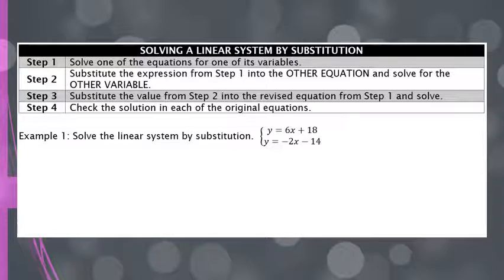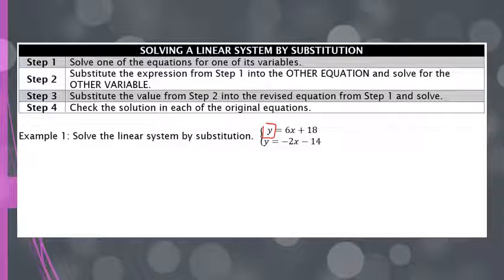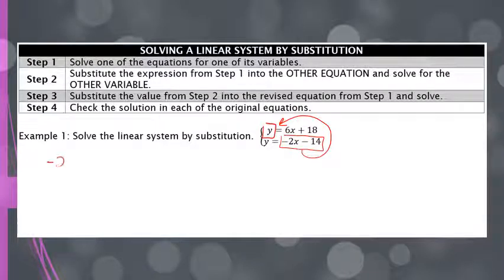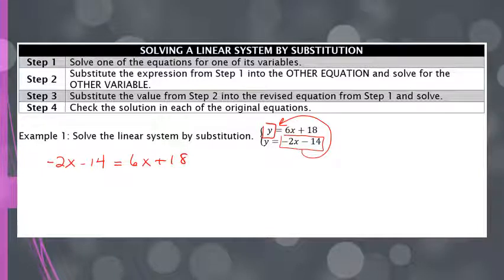The next thing we're going to do is substitute the expression that's solved into the other equation. This top equation says that y equals 6x plus 18, and the bottom equation says that y also equals negative 2x minus 14. So I'm going to take the bottom equation and plug it in for y in the top equation, writing negative 2x minus 14 equals 6x plus 18. I'm basically just setting the two expressions with x equal to each other.